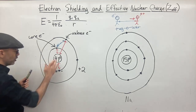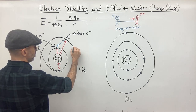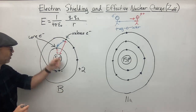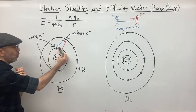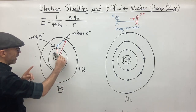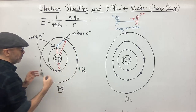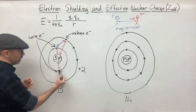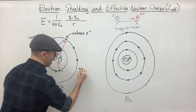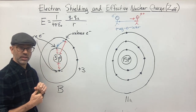If we add another proton to get five protons — boron — and add a third valence electron, the number of core electrons hasn't changed. We still have two core electrons shielding three valence electrons from the nucleus. Canceling out two of the five protons, the amount of attractive force felt by the valence electrons becomes plus three. So the effective nuclear charge felt by these electrons toward the nucleus is plus three.